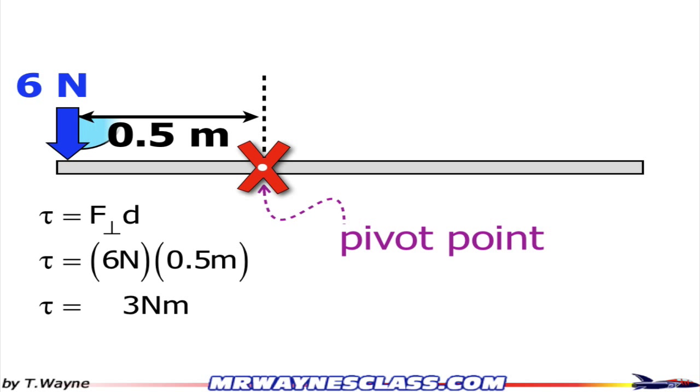So in this case, the force and the distance are already perpendicular to each other. That's the little blue angle I've just drawn on the page. So the torque is equal to six newtons times a half meter, or three newton meters.